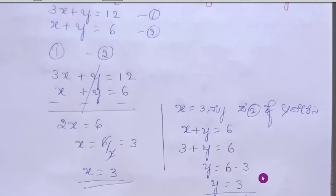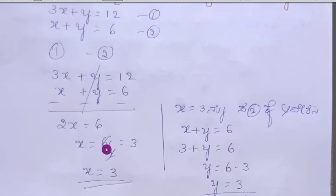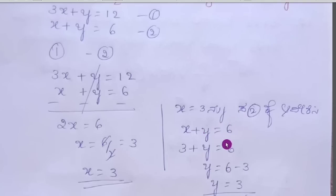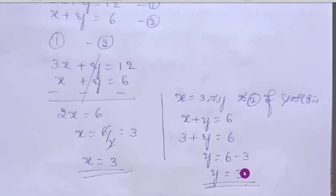Solve the given pair of linear equations: 3x + y = 12 (equation 1) and x + y = 6 (equation 2). Subtracting equation 2 from equation 1, y terms cancel, giving 2x = 6, so x = 3. Substituting x = 3 into equation 2: 3 + y = 6, so y = 3.